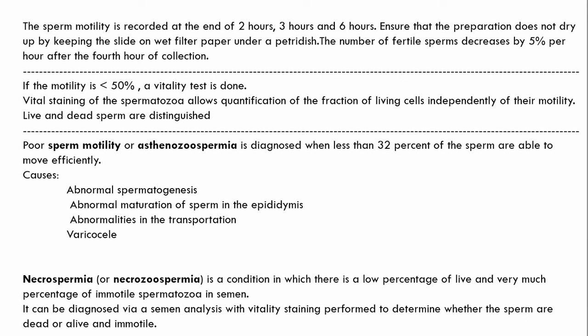Poor sperm motility, also called asthenospermia, is diagnosed when less than 32% of the sperm are able to move effectively. Causes include abnormal spermatogenesis, abnormal maturation of sperm in the epididymis, abnormalities in transportation, and varicocele — enlargement of veins within the scrotum. Necrospermia, also called necrosuspermia, is a condition where there is a low percentage of live and a very high percentage of immotile spermatozoa in the semen, diagnosed via semen analysis with vitality staining.